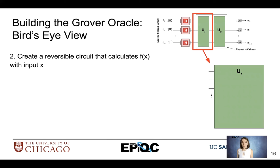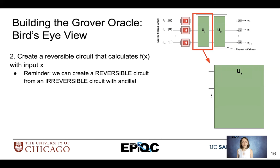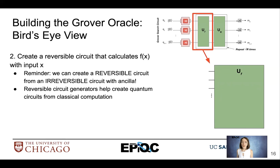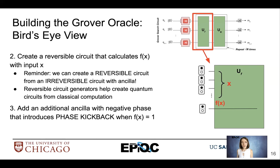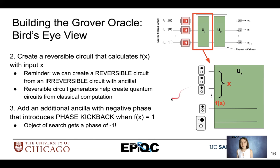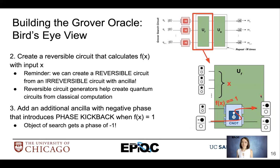Next, we create a reversible circuit that calculates f(x) with input x. We previously discussed how we can use tools like ancilla qubits to create reversible functions out of irreversible functions. Once we have a reversible circuit generated, we add an additional ancilla with negative phase that introduces phase kickback when f(x) equals 1. That allows our object of search to receive a phase of negative 1. If f(x) equals 1, phase kickback occurs — as we learned about in previous lectures.